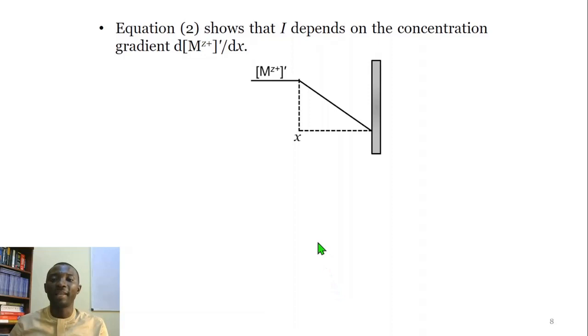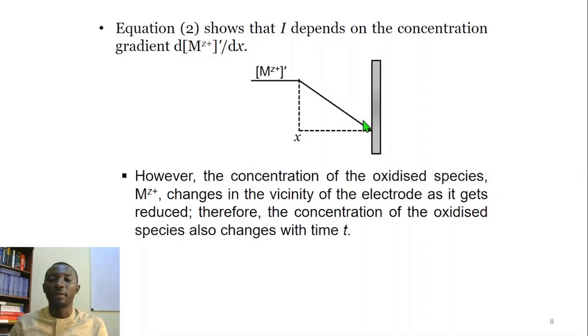According to equation 2, the current depends on concentration gradient. That is, how steep this is, or how much of the ions are in solution, and less of it are at the electrode surface. However, because these ions are being diffused to the surfaces of the electrode, and as a result, they are being reduced, their concentration at the vicinity of the electrode is going to be changing continuously. So the concentration of the oxidized species changes with time.